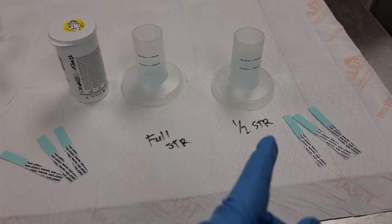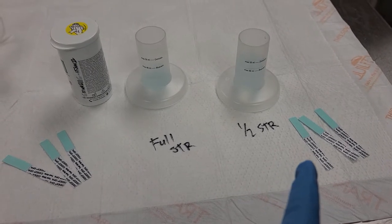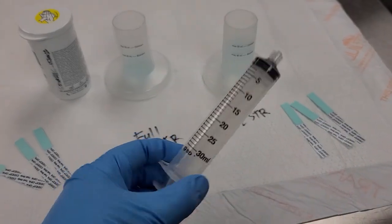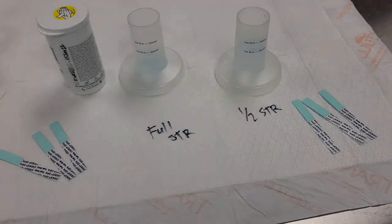To achieve half strength, you're going to put in equal parts Cydex and equal parts sterile water. This can be done with a syringe, just make sure you put 20 and 20, 10 and 10, whatever gives you a good solid amount.